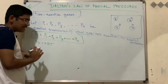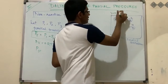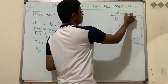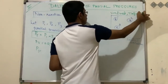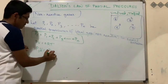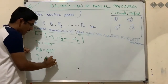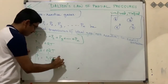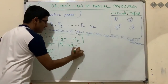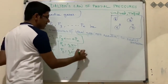Since each gas is ideal, we can write p1·V = n1·R·T. The volume of the container is fixed because the container is sealed, and the temperature is also fixed. Therefore p1 = n1·RT/V. Similarly, p2 = n2·RT/V, and p3 = n3·RT/V.